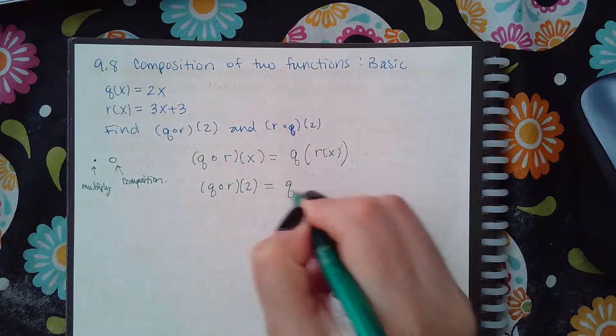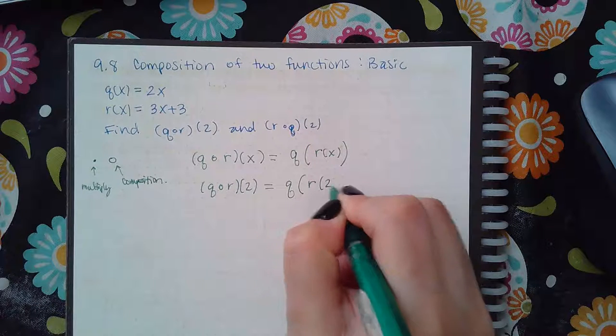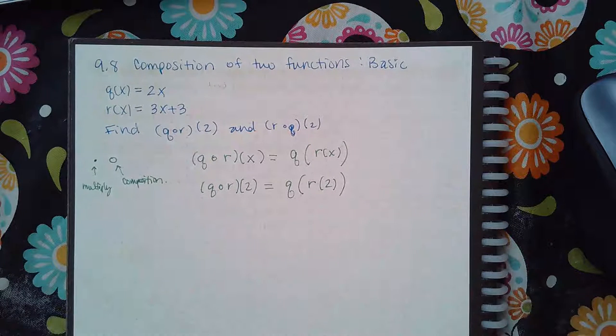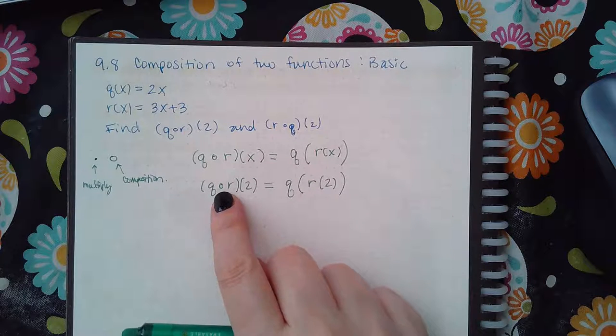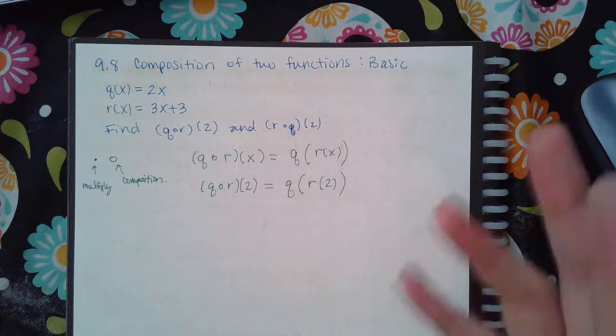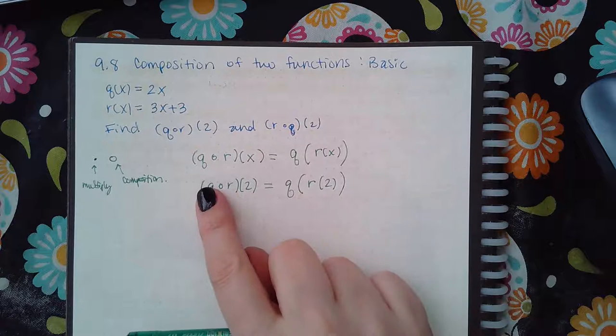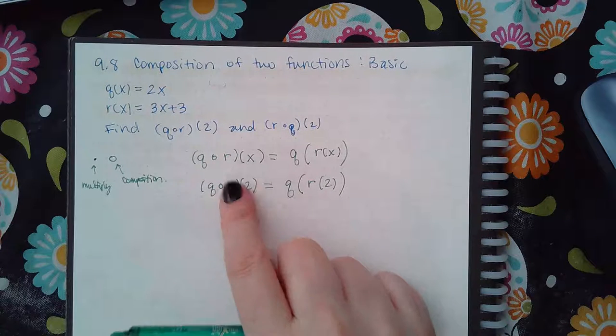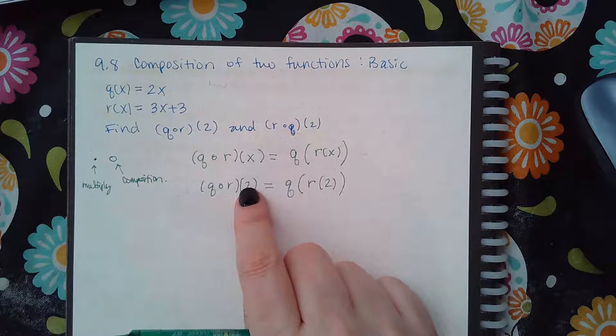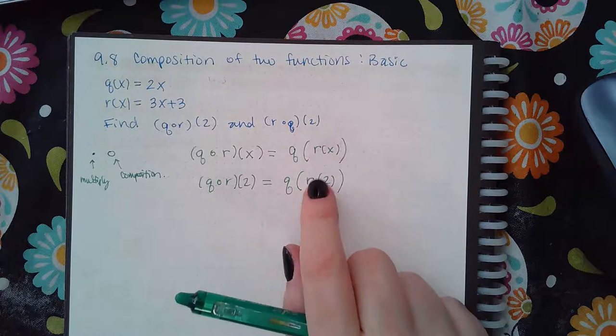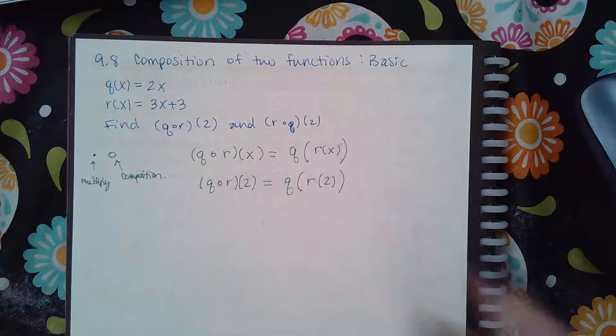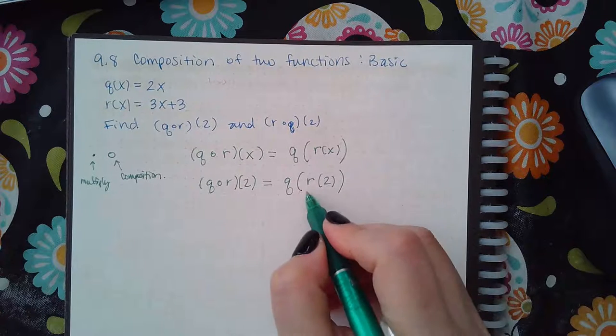Which means I'm finding q of r of two. It's the other way to write it. When you read this symbol, it's 'of,' and when you read the parentheses, you say 'of' again. So q of r of two, and that's exactly what I read here: q of r of two.